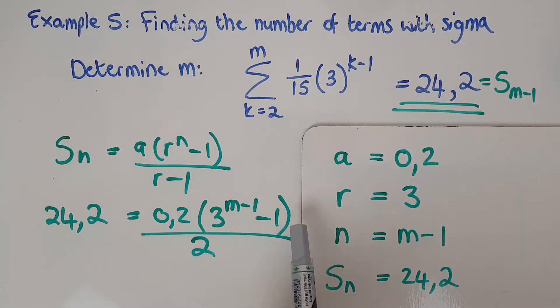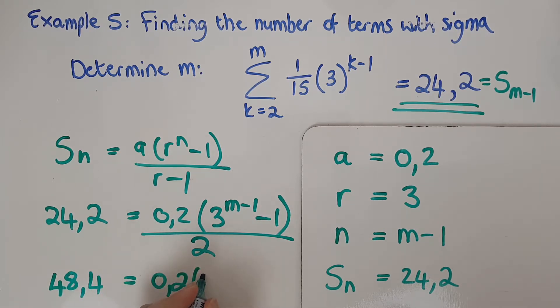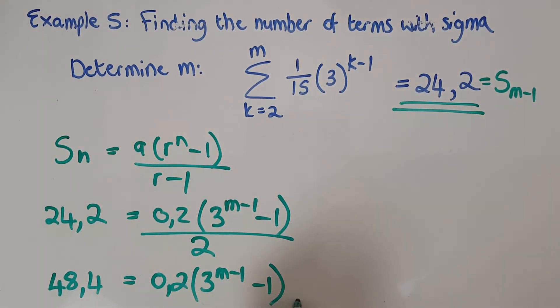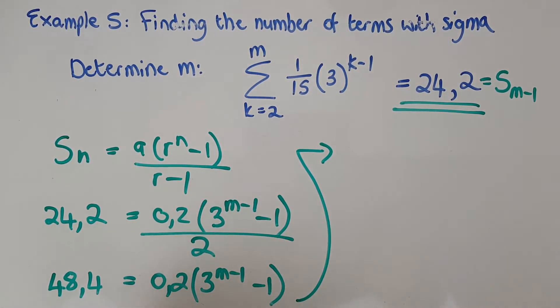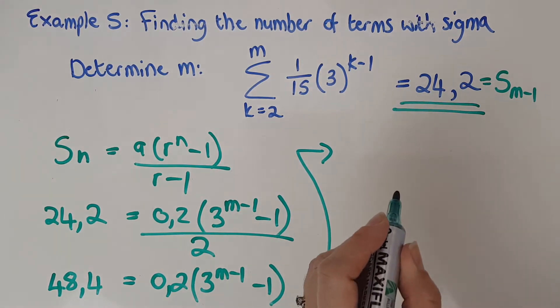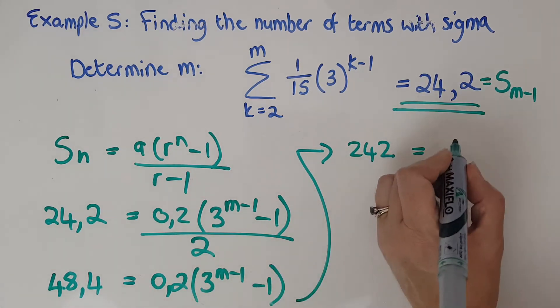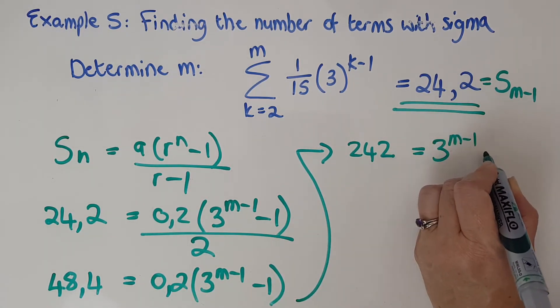Can't multiply in because super awkward and not following BODMAS. So what I need to do is multiply that 2 on that side. Once I've done that, I'm going to have 48 comma 4 and then I'm going to have this 0 comma 2 thing with the 3 to the m minus 1 and then minusing another 1. I'm going to get rid of this thing. So I'm going to divide both sides by the 0 comma 2. When I divide by 0 comma 2, I get 242 equals this thing. So it's going to be 3 to the m minus 1 and then minus 1.